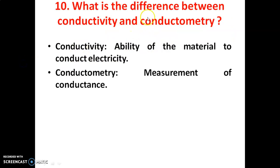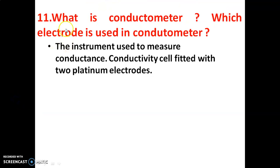Tenth question: What is the difference between conductivity and conductometry? Conductivity means the ability of a material to conduct electricity. Conductometry is the measurement of conductance. Eleventh question: What is a conductometer and which electrode is used? The instrument used to measure conductance is called a conductometer. A conductivity cell fitted with two platinum electrodes is used.